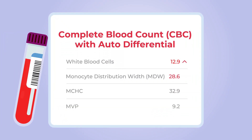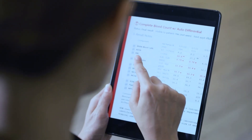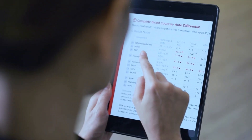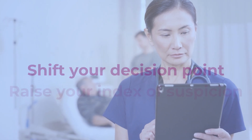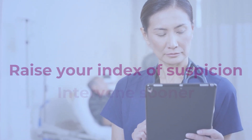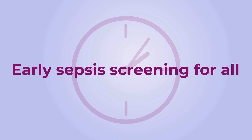MDW values greater than 20, together with other laboratory findings and clinical information, helps in identifying patients with sepsis or at an increased risk of developing sepsis. By adding MDW to your patient assessment protocol, you can shift your decision point, raise your index of suspicion, and intervene sooner when time to identification and treatment is everything.